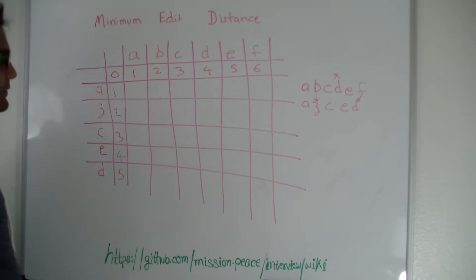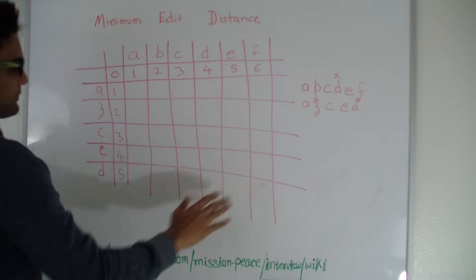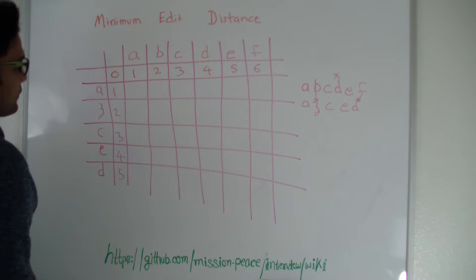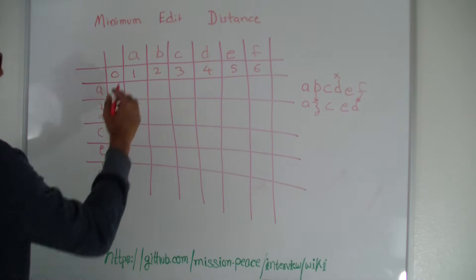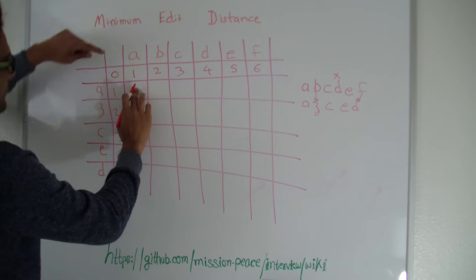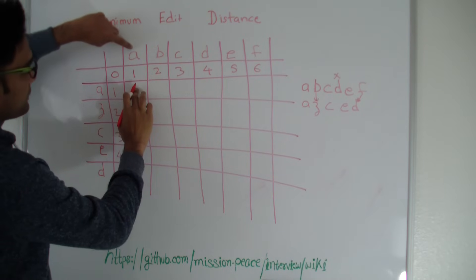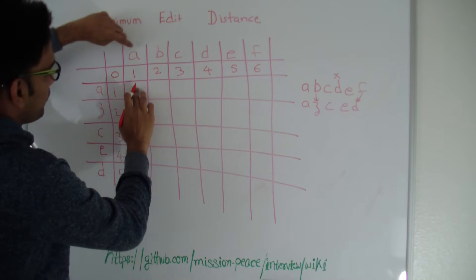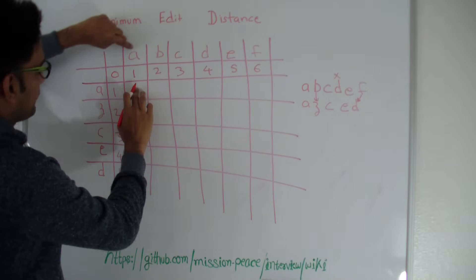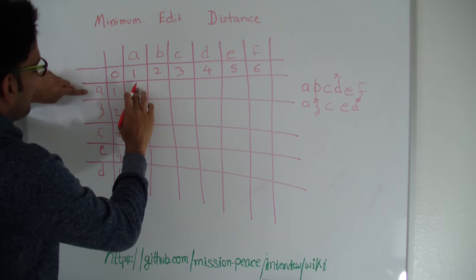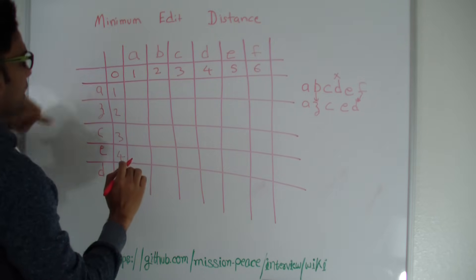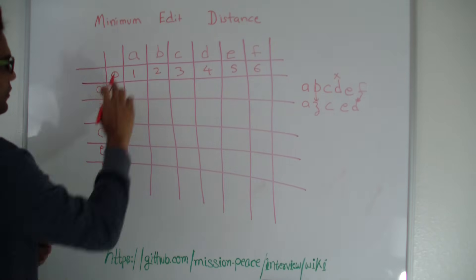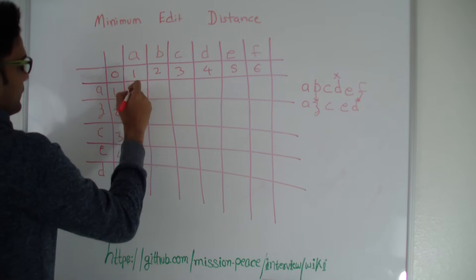Now let's start filling up the rest of the matrix. If our first string only had one character A and our second string only had one character A, how many edits would it take to convert A to A? Zero.